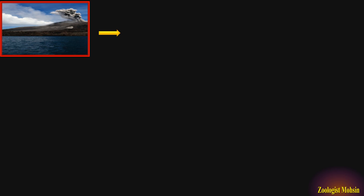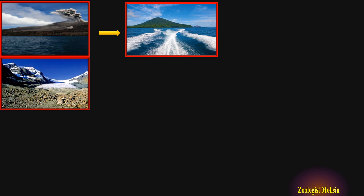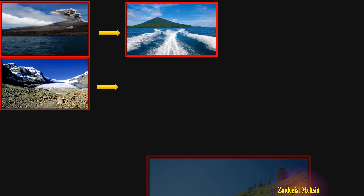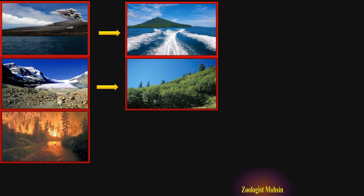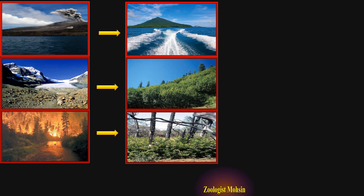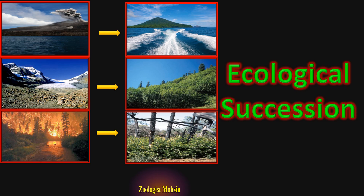When volcanic eruptions in oceans create new volcanic islands, how does this lifeless island change into a rich, green, beautiful island? When a glacier retreats from a certain patch of land, how does that patch become a beautiful green landscape over time? What happens when a fire burns a forest and it regenerates its plant and animal diversity after some time? The simple answer is ecological succession.